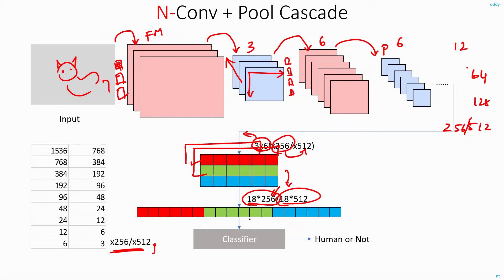This big feature vector is fed as input to the classifier, which looks at the image and tells you what kind of image it is — whether it is human, dog, cat, etc. This is how the cascading of convolution and pooling works, using multiple feature maps at each stage.